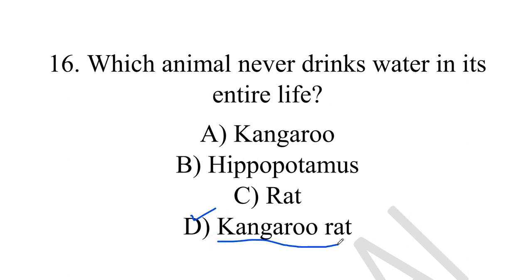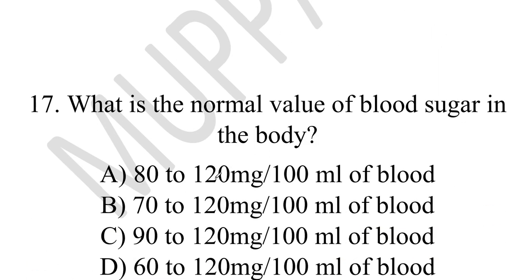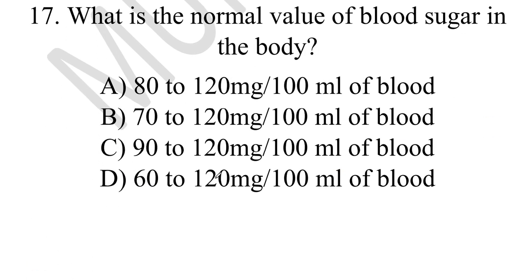The seventeenth question: what is the normal value of blood sugar in the body? The answer is option A, 80 to 120 mg per 100 milliliters of blood.